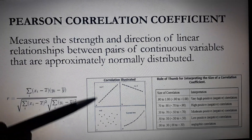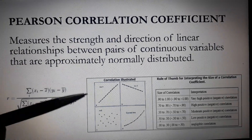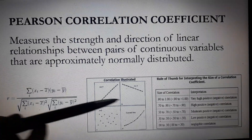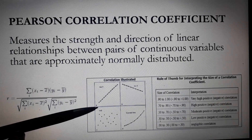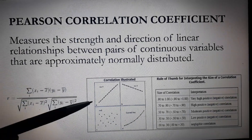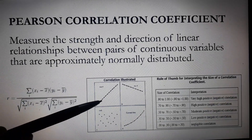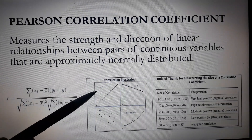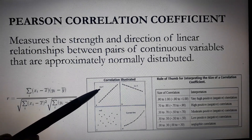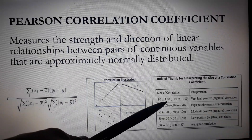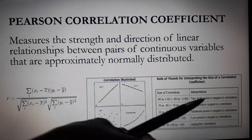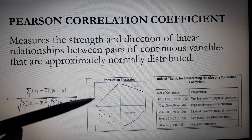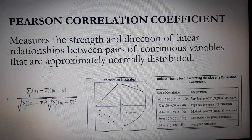Now let's consider our first scatterplot. If the X variable is placed on the horizontal axis and the Y variable is placed on the vertical axis, and the points form a straight line sloping upward to the right, it means that R is equal to 1, interpreted as very high positive correlation. This means that as X increases, Y increases proportionately.